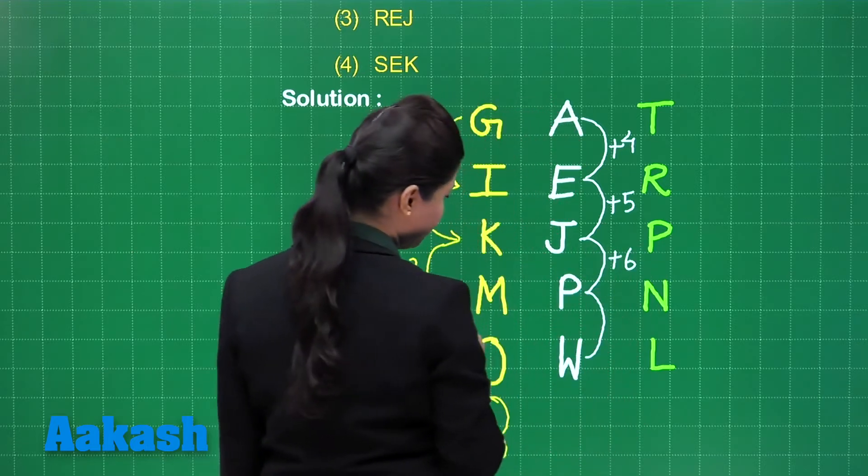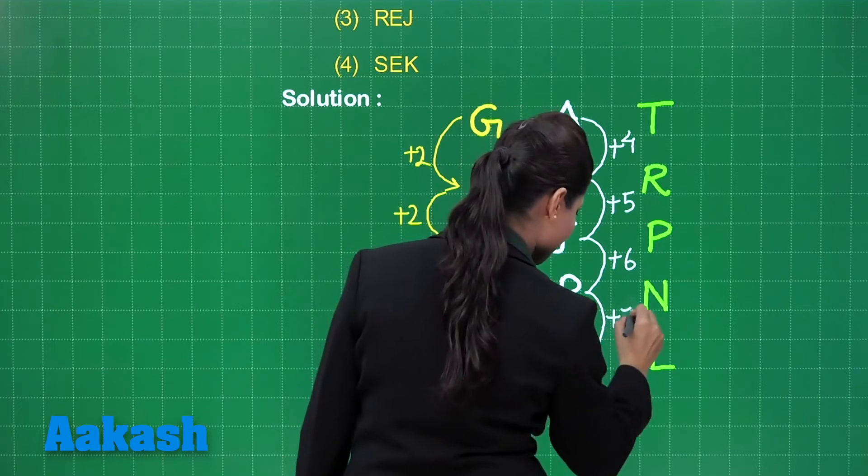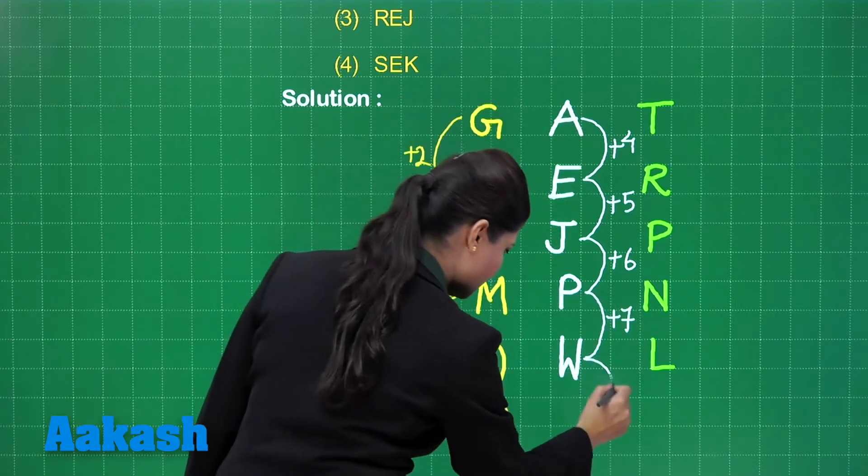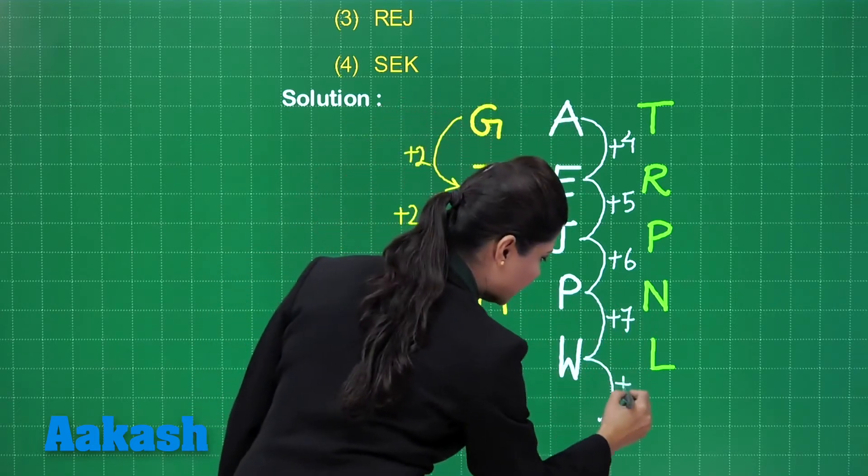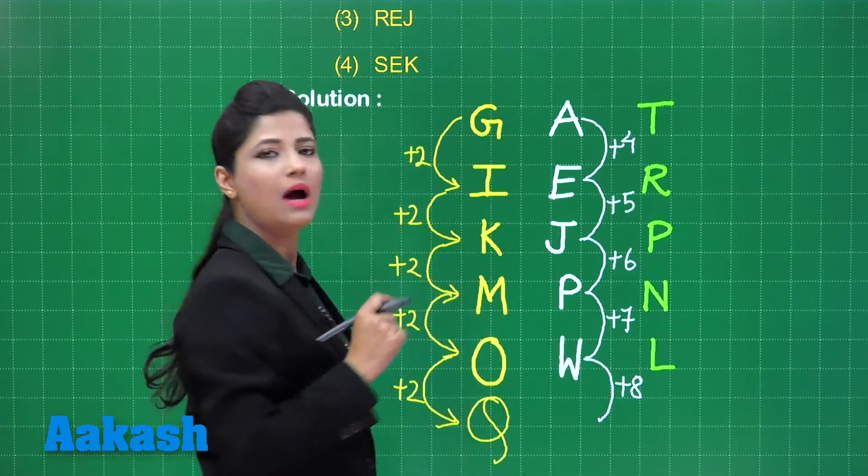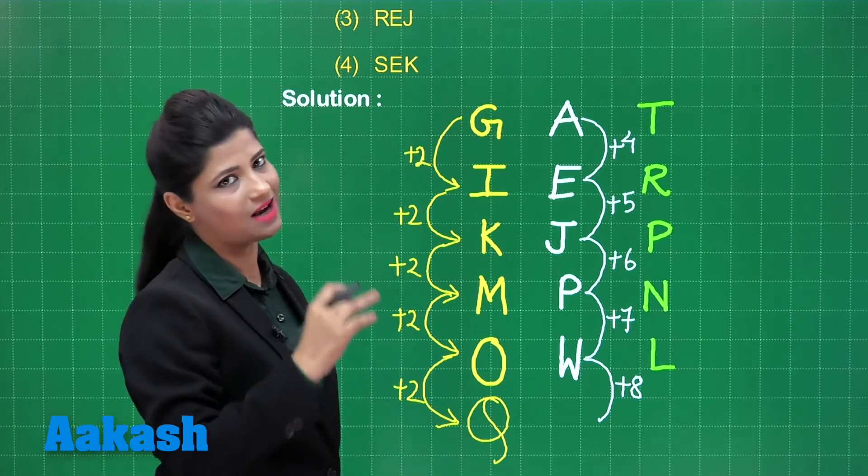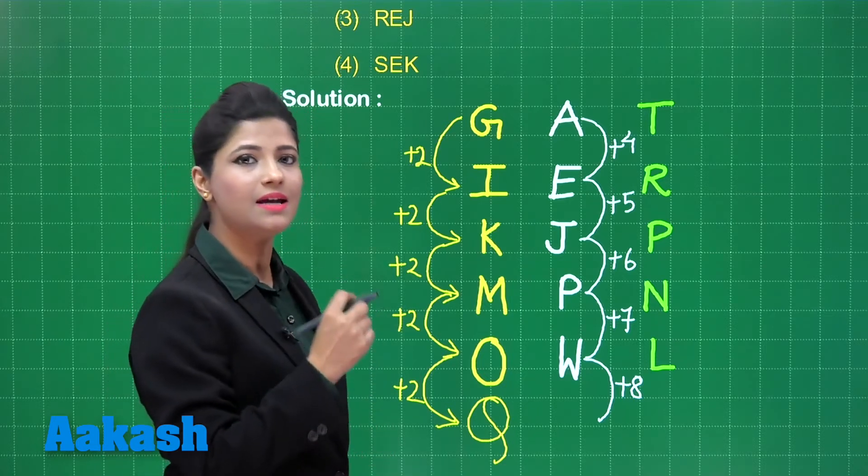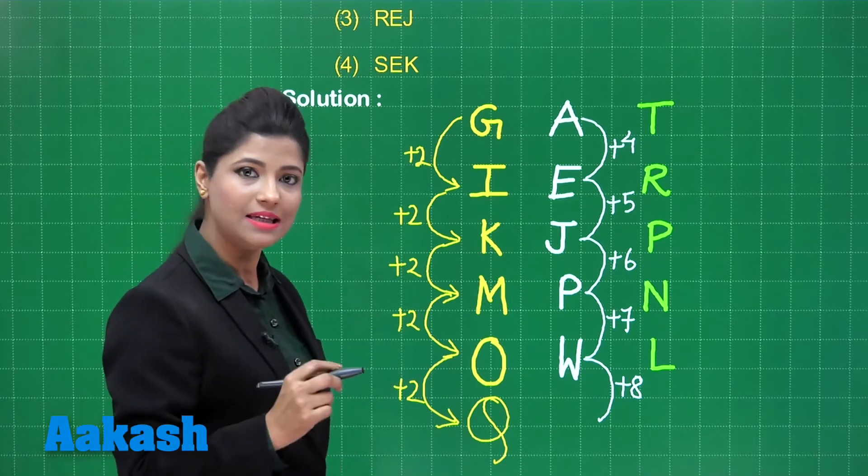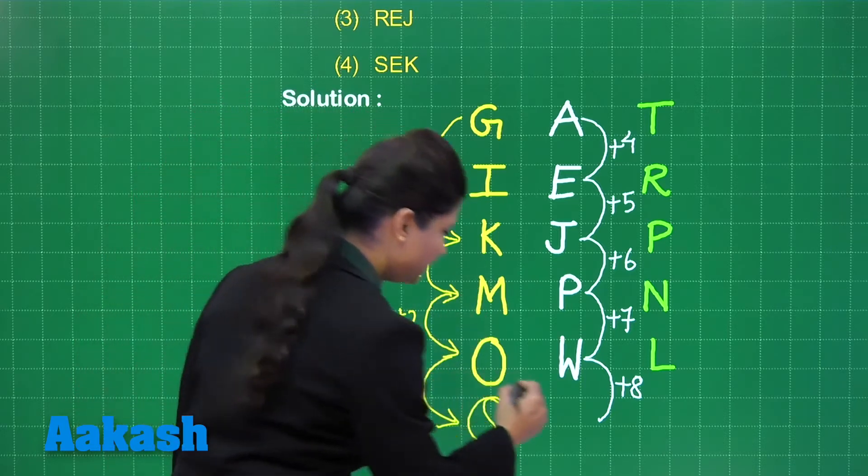In similar manner, P to W, you will have to move seven alphabet positions. That means to move to the next alphabet, you will have to move eight alphabet positions. So after W, you have XYZ, three alphabets. To count eight alphabets, we again start the alphabet series. That is A, B, C, D and E. That means eighth alphabet will be here E.